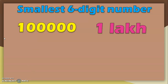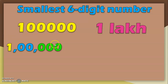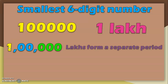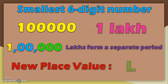Now let us apply the concept of periods to this 6-digit number. The 1's, 10's, and 100's together form the 1's period. The 1,000's and 10,000's digits together form the thousands period. And we have a new digit which forms the lakhs period — that is a separate period. So we have learned 3 periods: the 1's period, the thousands period, and the new lakhs period formed by the 6th digit. We are learning a new place value represented by the letter L.